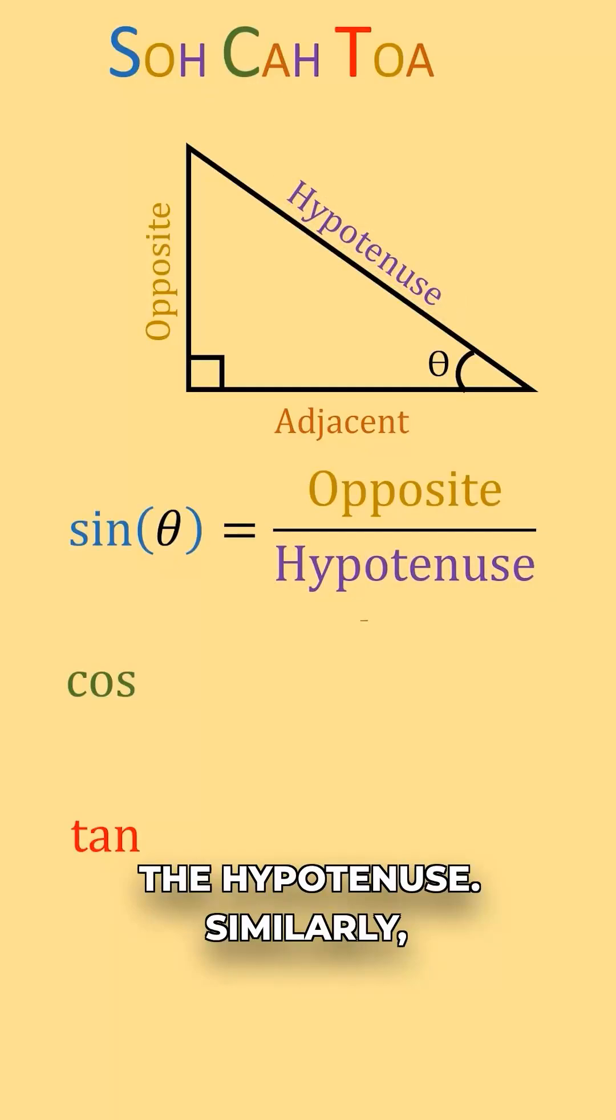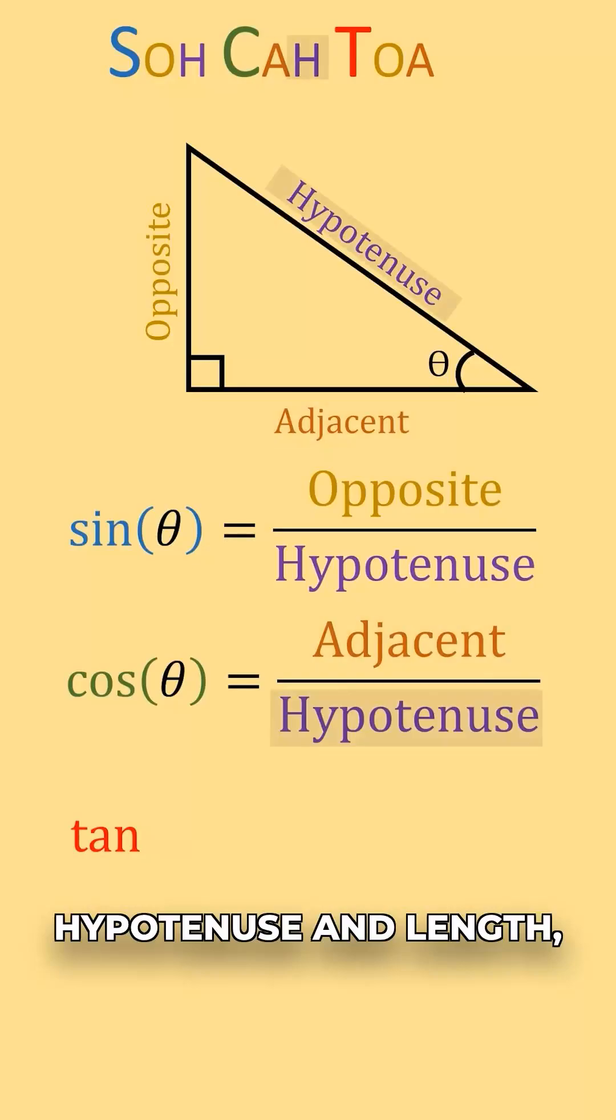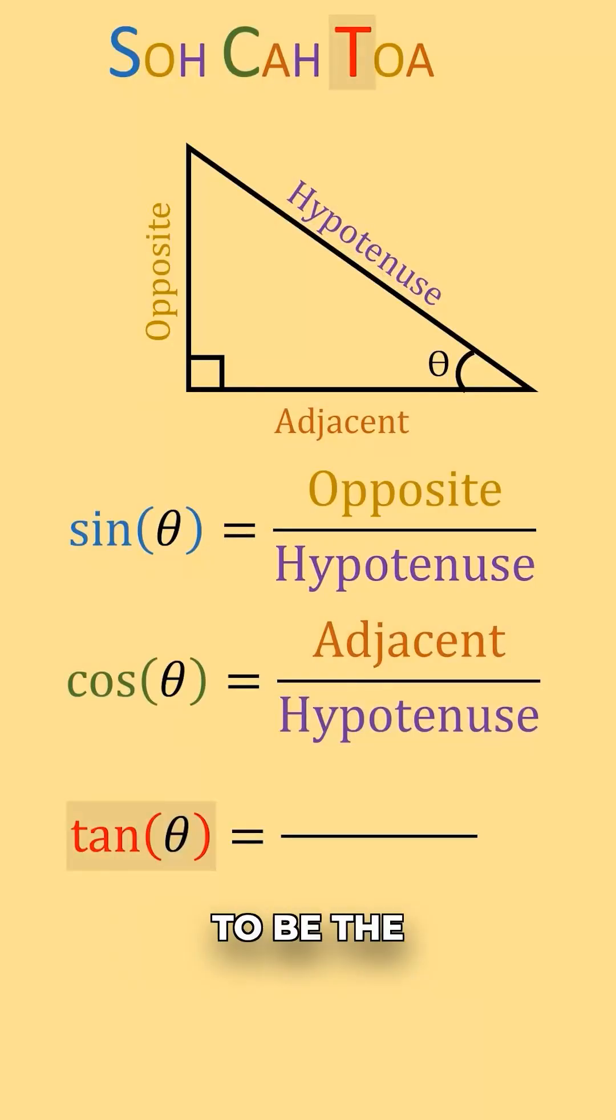Similarly, cosine of theta is going to be the adjacent length over the hypotenuse length. And then tangent of theta is going to be the opposite length over the adjacent length.